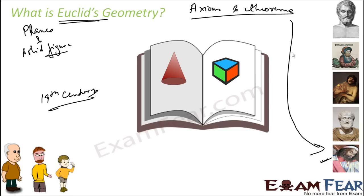Euclid's geometry is a geometry of planes and solid figures based on axioms and theorems compiled by Euclid. Prior to this, mathematicians like Thales, Pythagoras, Aristotle, and Democritus had given many good theorems, but these were passed on by word of mouth or through leaves. So Euclid compiled everything into a book called 'Elements,' and that is why this geometry is called Euclid geometry.